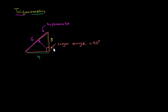You probably learned that already from geometry. And you can verify that this right triangle's sides work out. We know from the Pythagorean theorem that 3 squared plus 4 squared has got to equal the hypotenuse squared, which is 5 squared. So this satisfies the Pythagorean theorem.